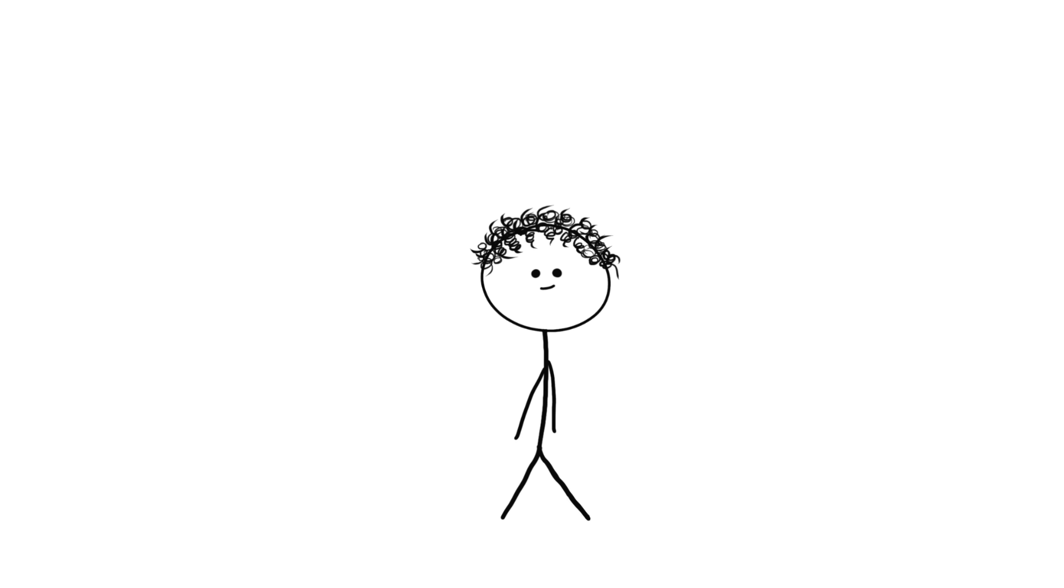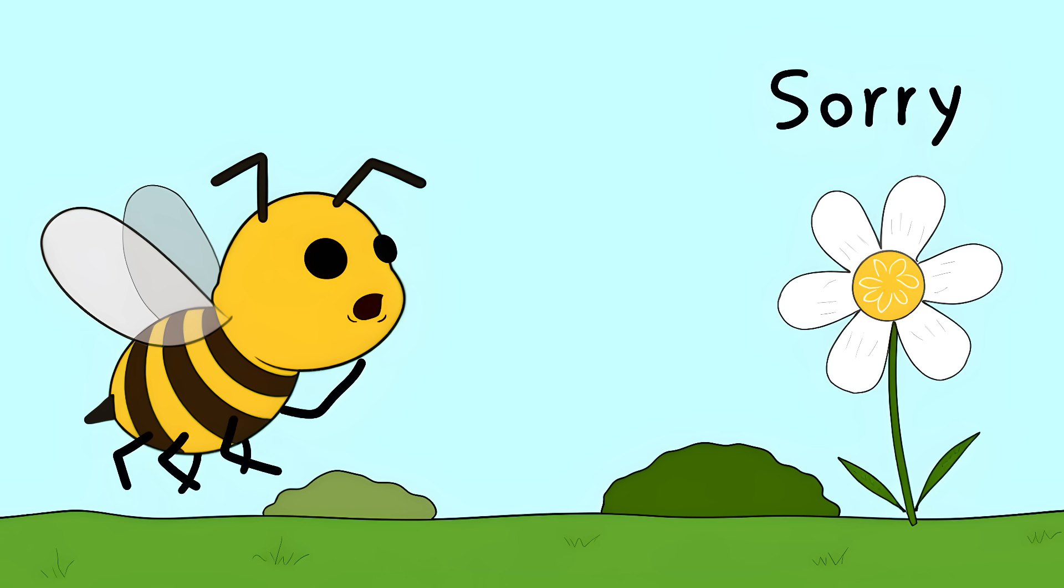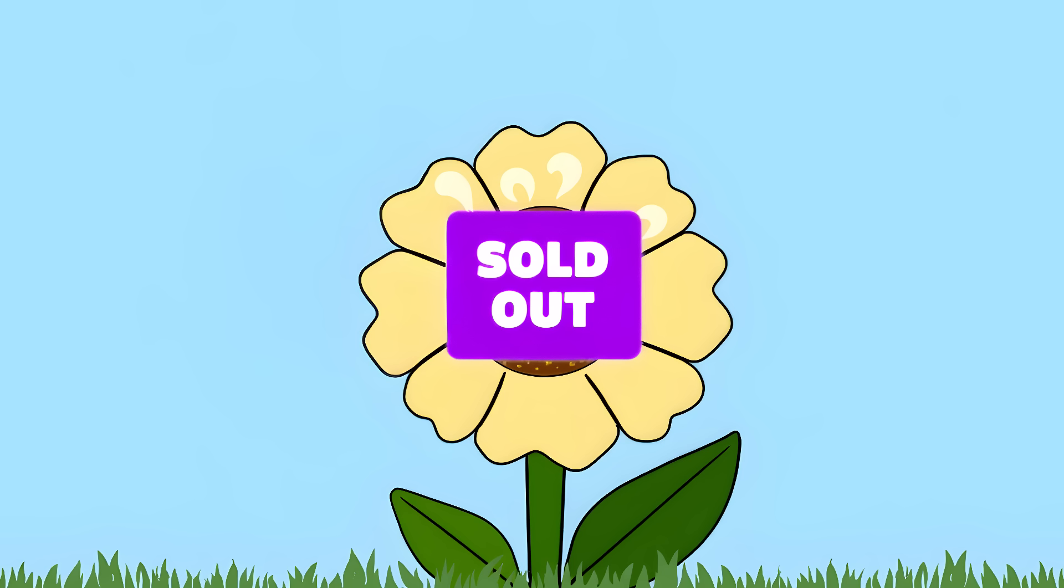Sunflowers even have UV patterns that change after they've been visited, basically telling other bees, 'sorry, we're all out of nectar.' It's nature's version of a sold-out sign that only bees can read.